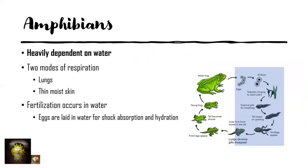The next clade within tetrapods is amphibians, which is still very heavily dependent on water. There are two modes of respiration: lungs, which are not yet efficient enough for life purely on land, and moist skin, which aids gas exchange. Having moist skin means you still need to be near water. Additionally, fertilization still needs to occur in water — frogs, for example, lay their eggs in water where sperm and egg must meet. Eggs also remain in water for shock absorption, hydration, and to prevent drying out.